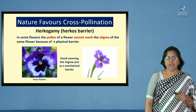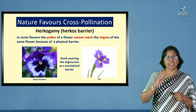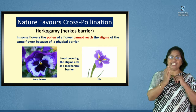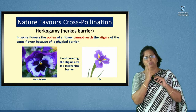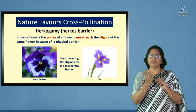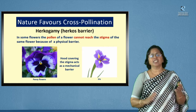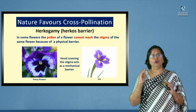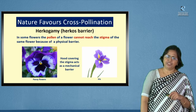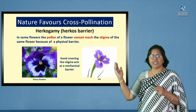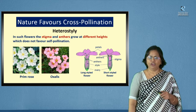Herkogamy — 'herkos' means barrier. A physical barrier exists in some flowers. The anther and the stigma mature at the same time, but one of the petals or a part of the flower, sometimes even the filament, is broadened in such a manner that it creates a physical barrier between the stigma and the anther. So there is no chance of the flower's own pollen falling on its own stigma. As seen in this example, a kind of hood has been created around the stigma so that its own pollen cannot fall on it.